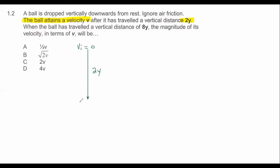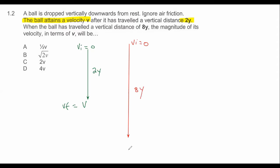The final velocity in Situation 1 is v. Now for Situation 2, the initial velocity would also be 0, and this distance is 8y. We need to calculate what the final velocity is.